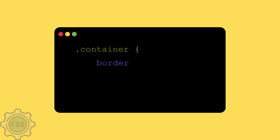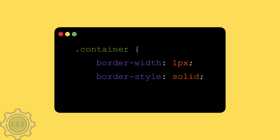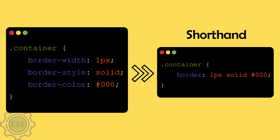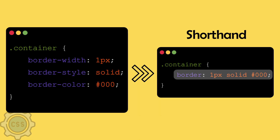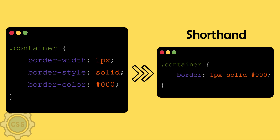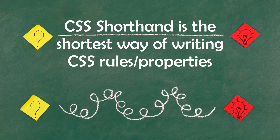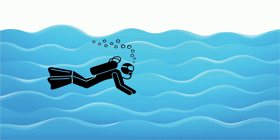Here I have defined some border properties. You can see that I have individually written these properties like border-width, border-style, and border-color. I can define more such properties as per my requirement. Now all these properties can be set in a single line as well. Here is how you can do it — all three border properties written in a single line. So this is what CSS shorthand is. It is the shortest way of writing CSS rules or properties. Let's dive deep into this topic and check where else we can use shorthands.